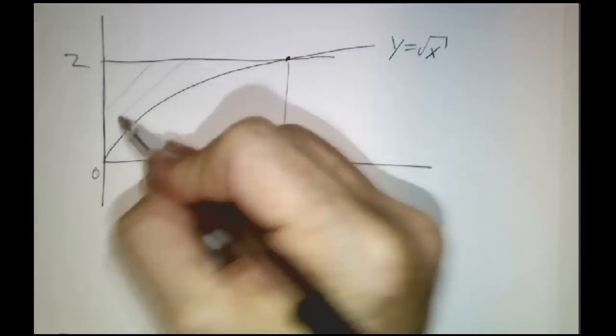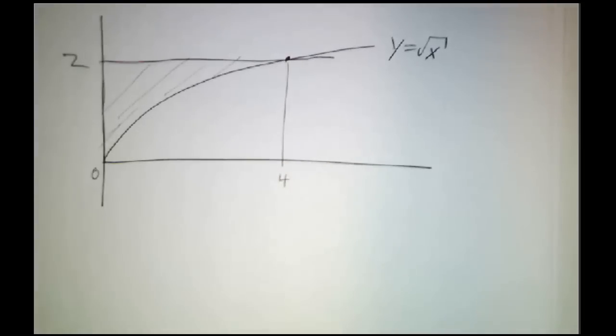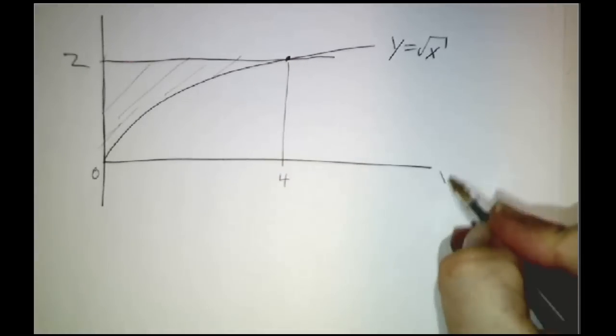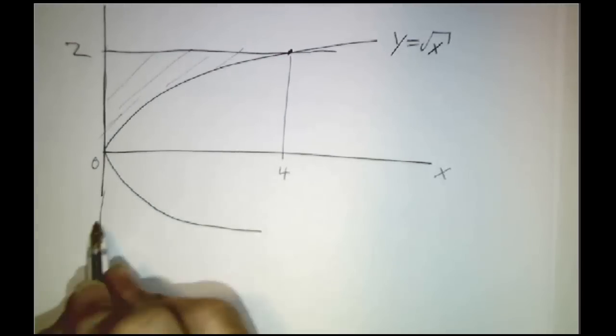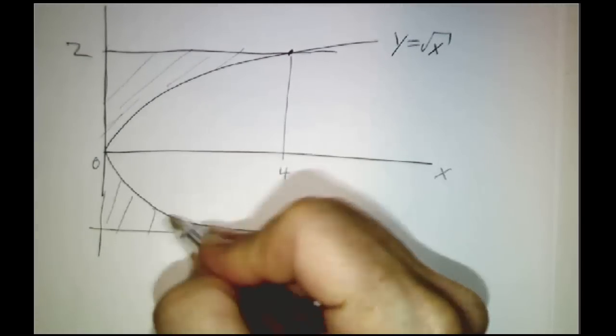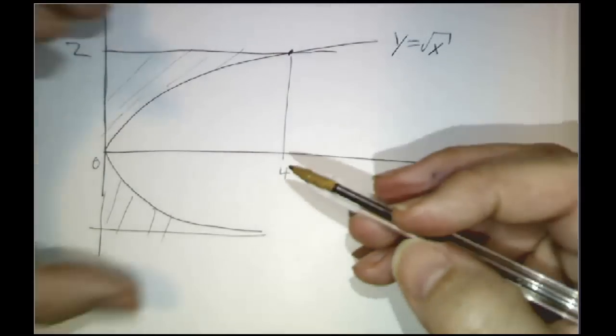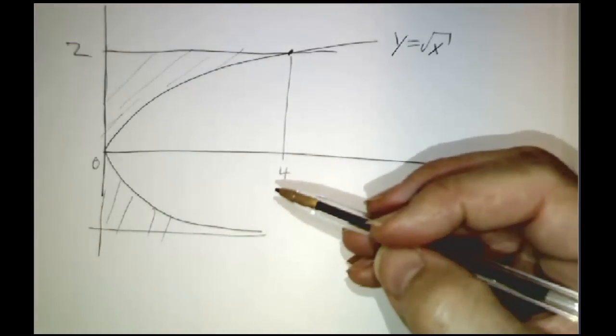So we want to take this region and we spin it around the x-axis to get a region that looks kind of like, well, it's a cylinder minus this bullet-shaped region on the inside.